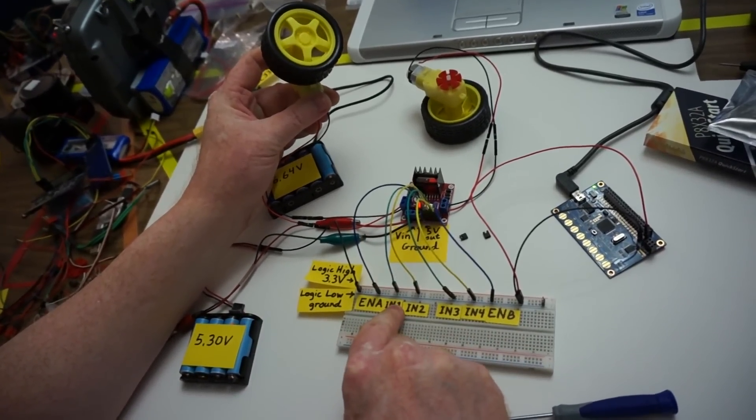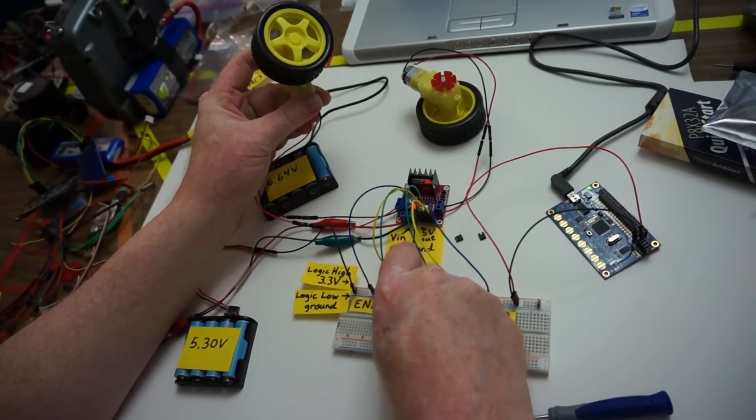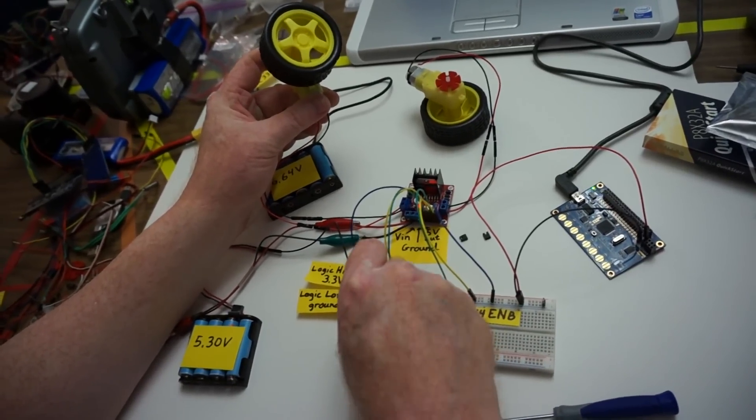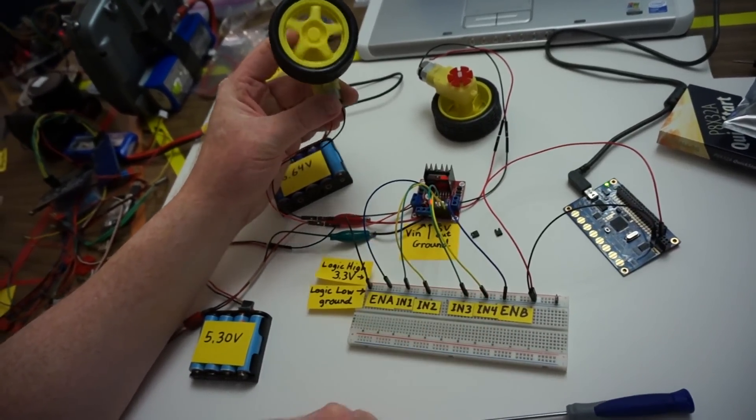Now this time let's leave enable or input one high and input two we'll put low. And now when we put enable high, the motor turns.